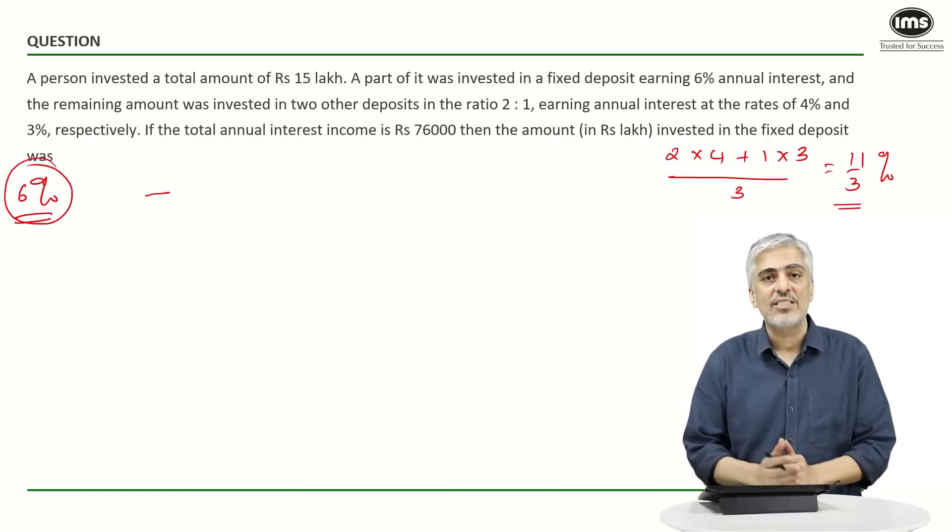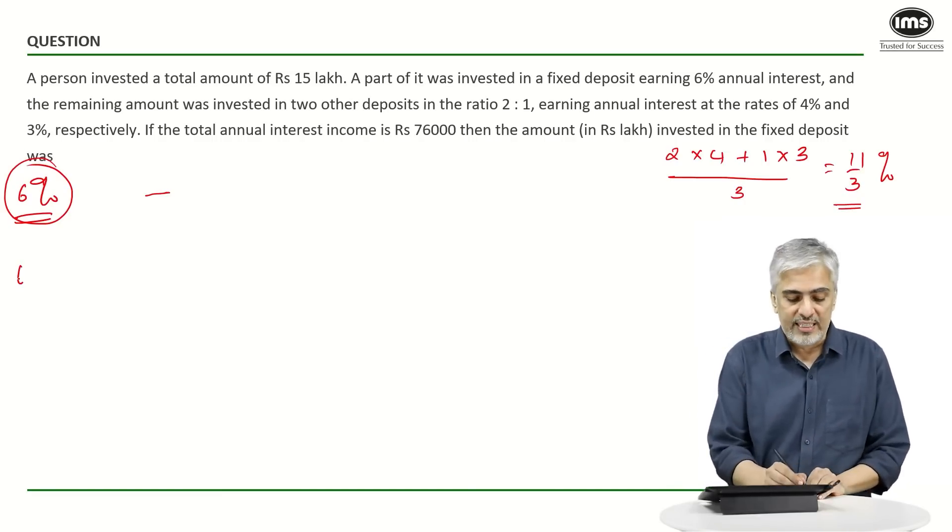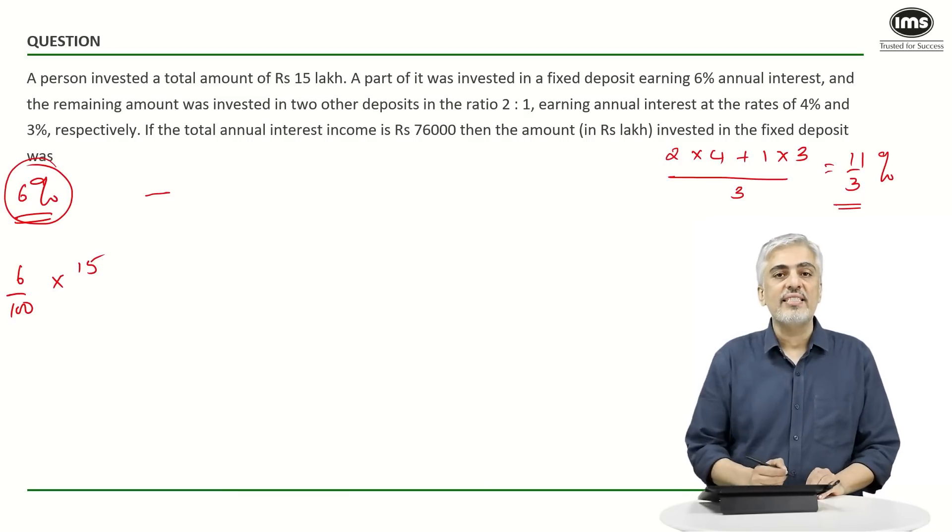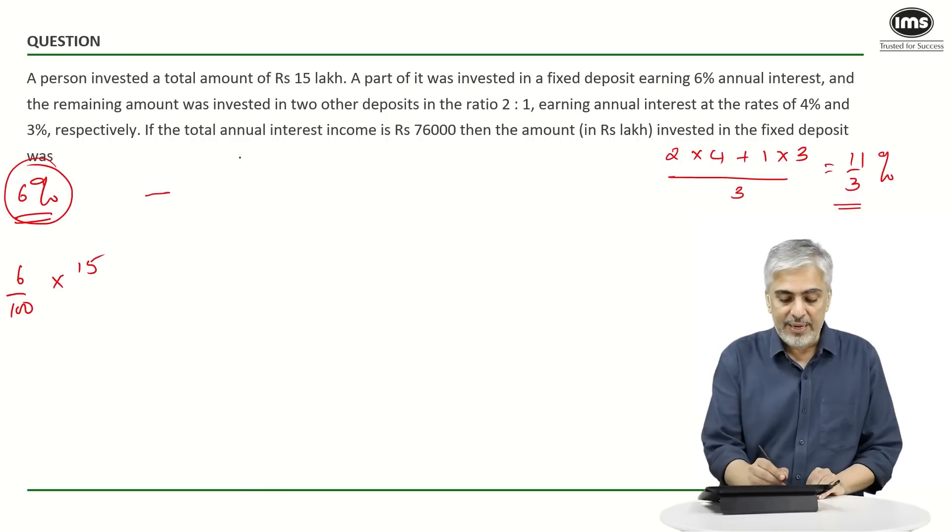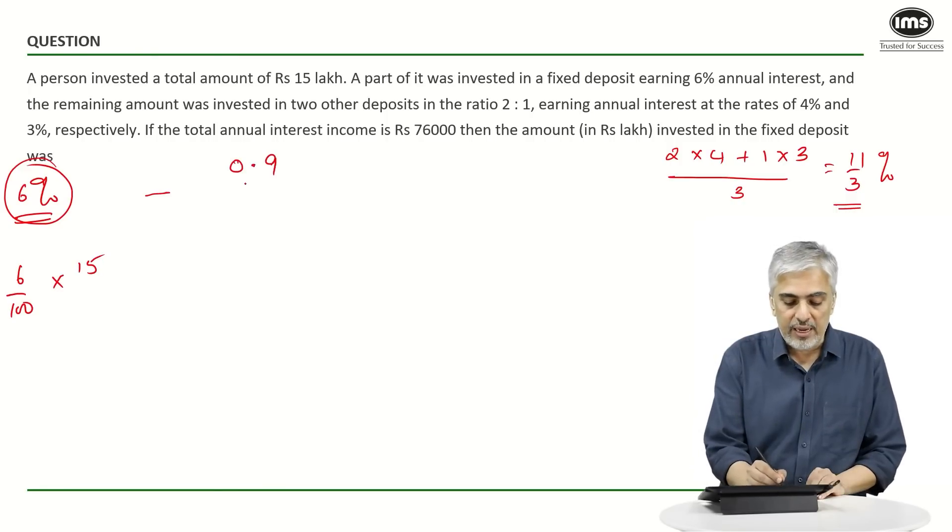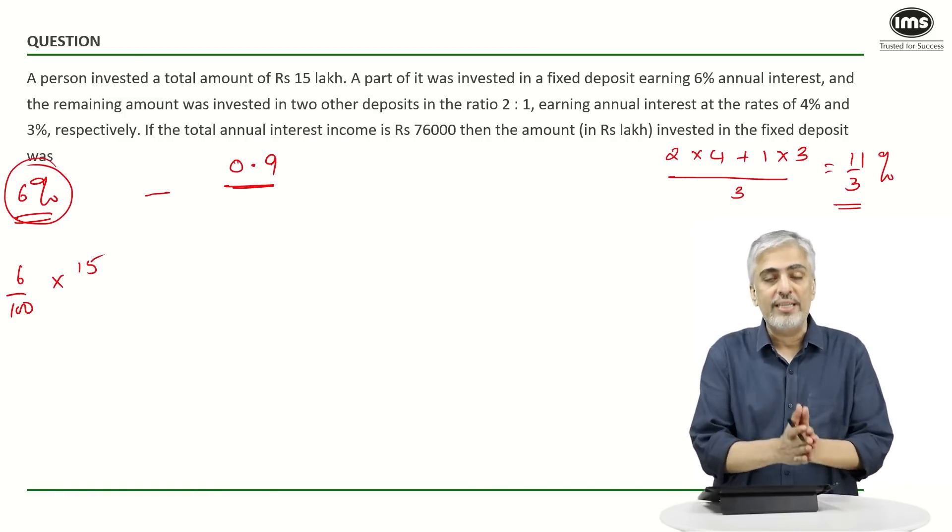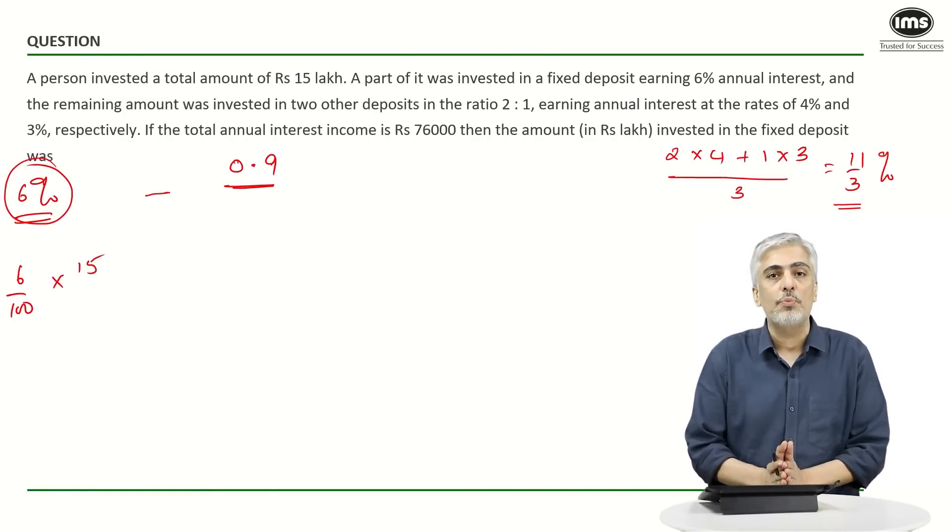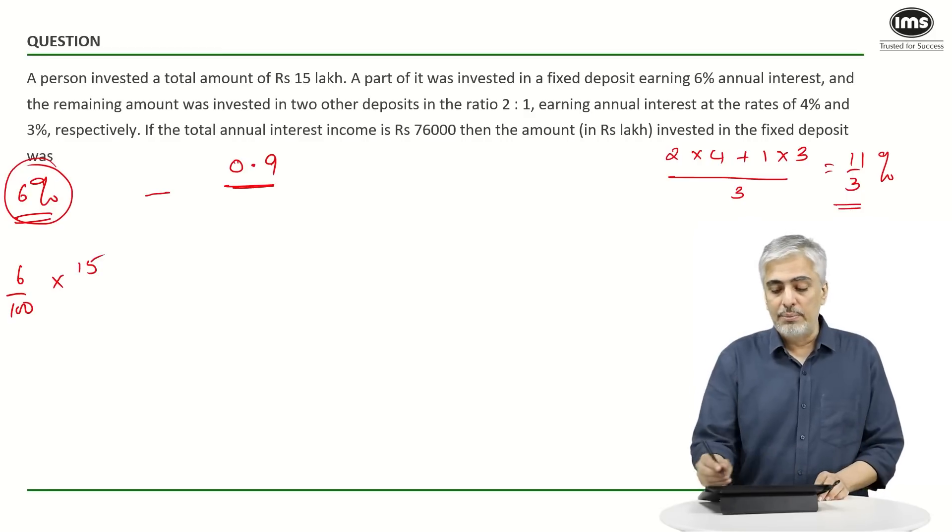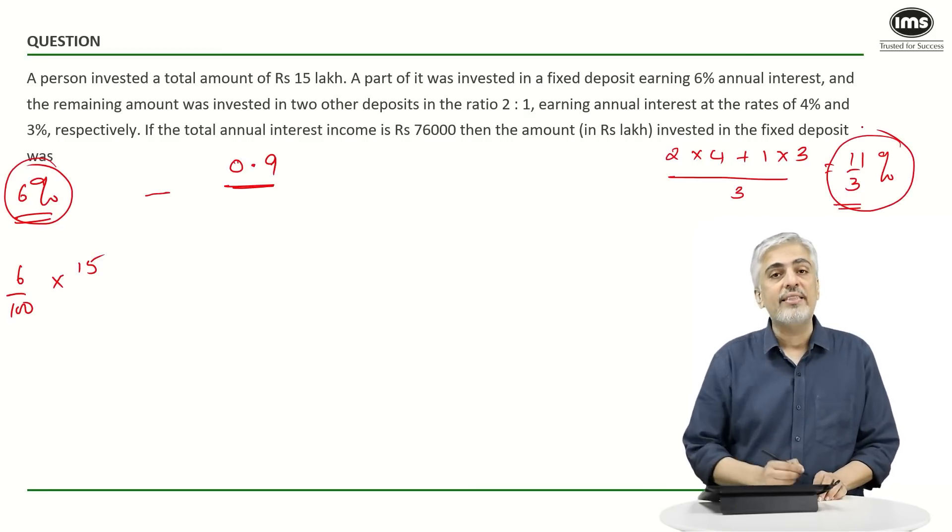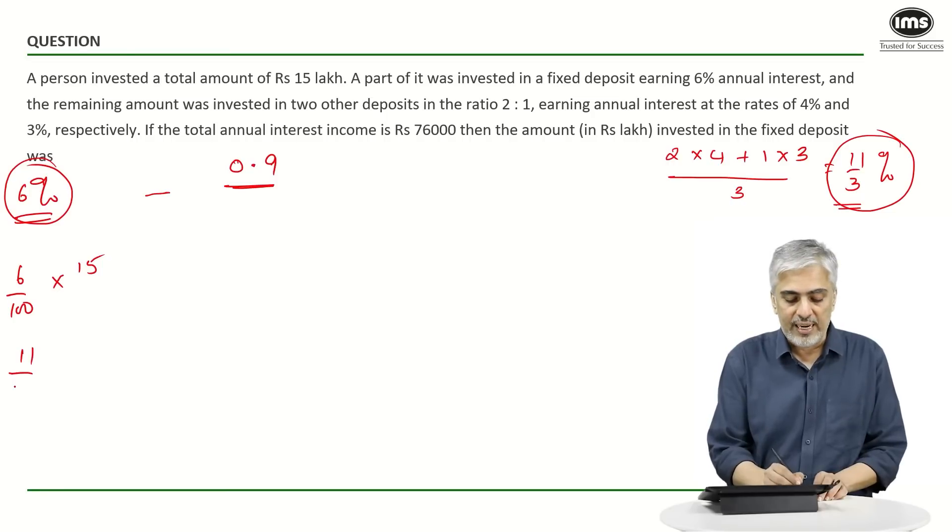Suppose he has invested everything at 6%, so how much is 6% of 15 lakhs? And I'm going to do everything in lakhs since the answer asked also is in lakhs. So what is 6% of 15 lakhs? You can do 15 × 6 is 90, 90 divided by 100 would be 0.9 lakhs. That means if he had invested everything at only 6%, he would have earned a total interest of 0.9 lakhs.